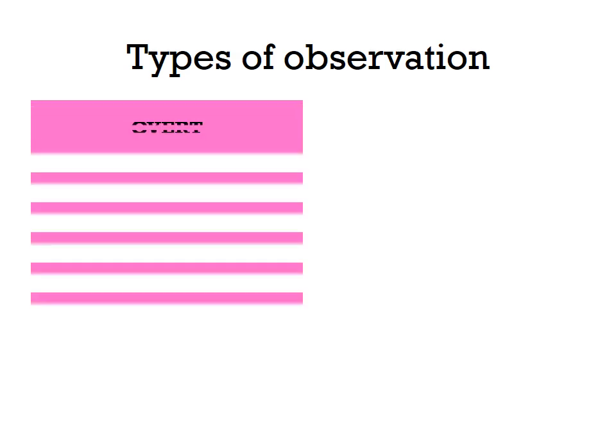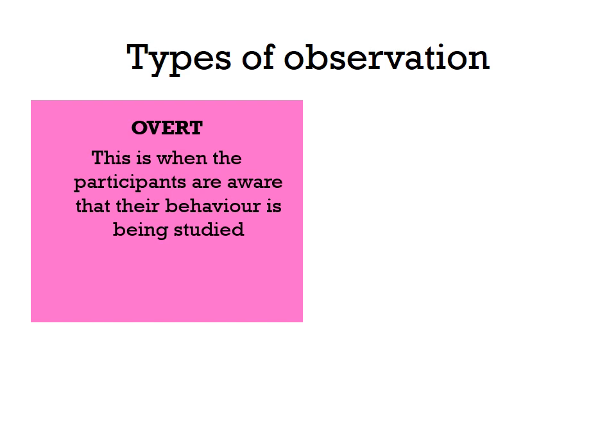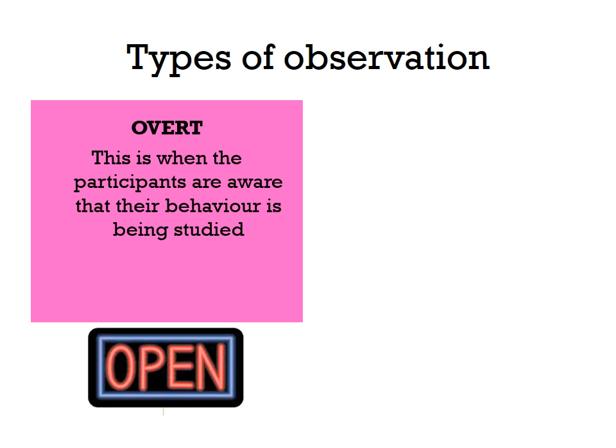An overt observation is when participants are aware that their behaviour is being studied. In a controlled observation it's highly likely participants know they are being observed, so an observation can be both controlled and overt. A problem with overt observations is that participants being aware of being studied could lead to demand characteristics — they may change their behaviour to suit the observer.